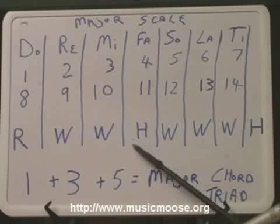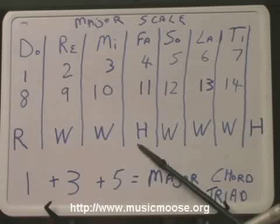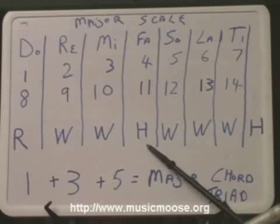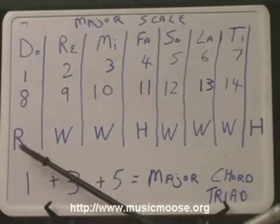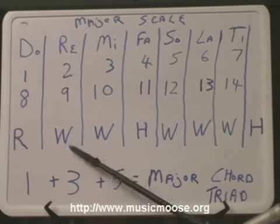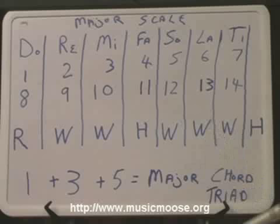Now we can say half step or whole step. The W can be a whole step, the H can be a half step. So this is the formula: R, W, W, H, W, W, W, H for a major scale.